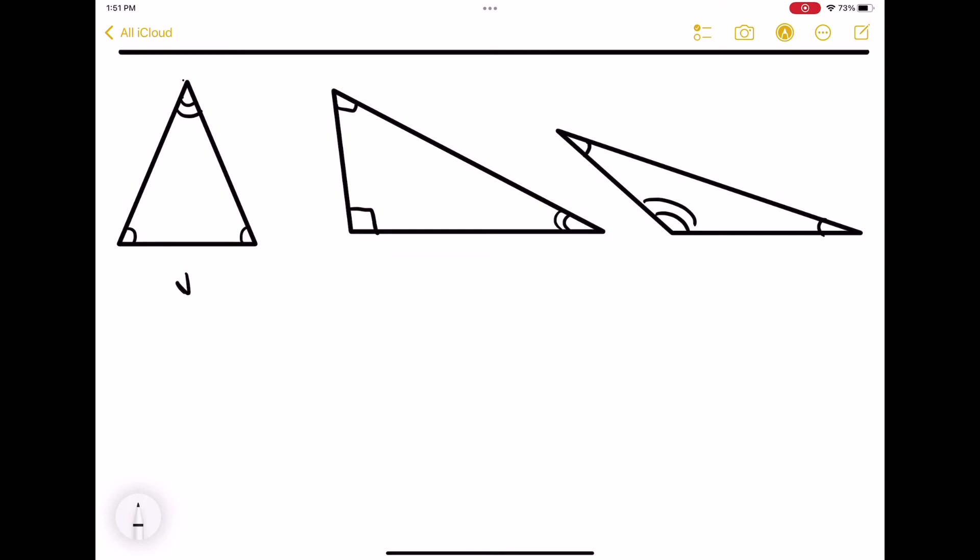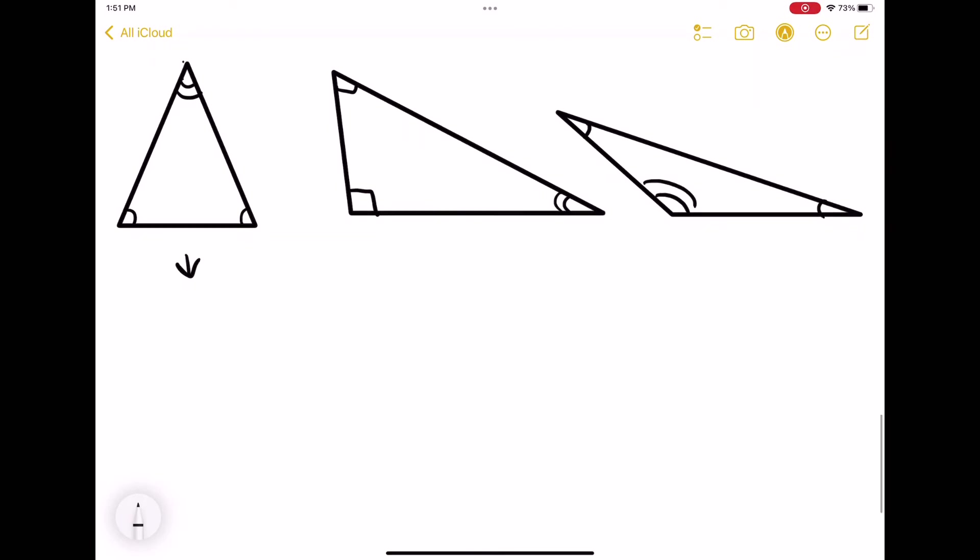Did you do it? Let's check if you got the correct answers. So the first one, two of the angles are the same, which means it's isosceles. And when it's isosceles, well, at least here, it is acute because all the angles are less than 90 degrees.